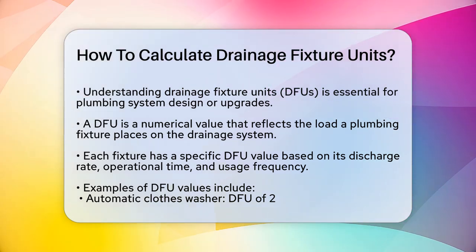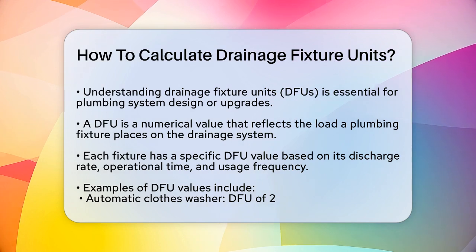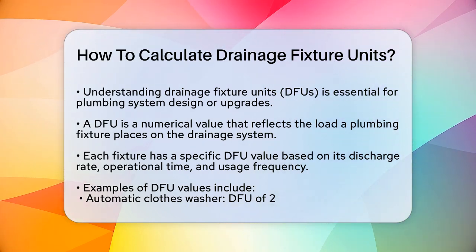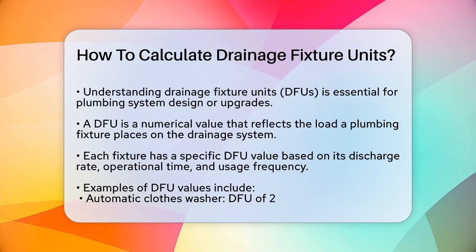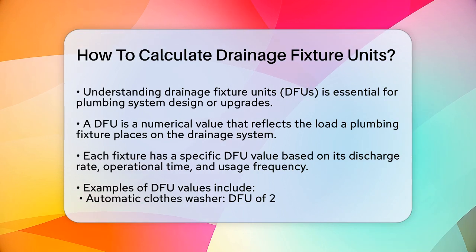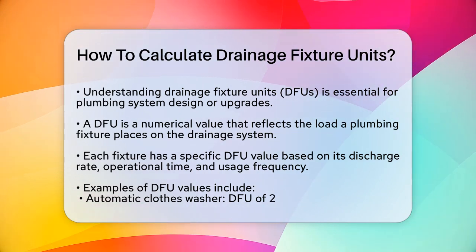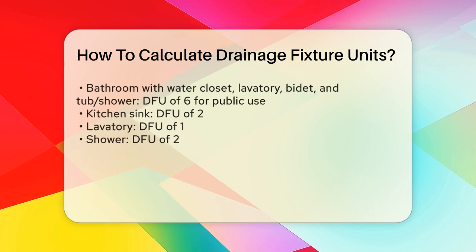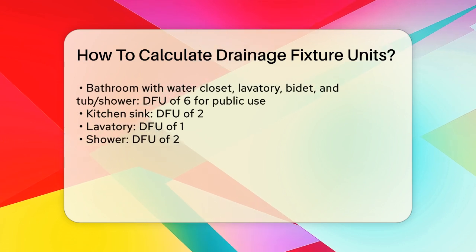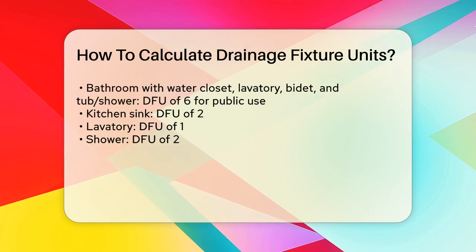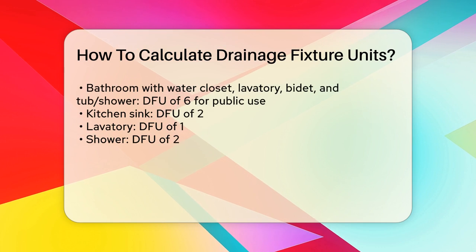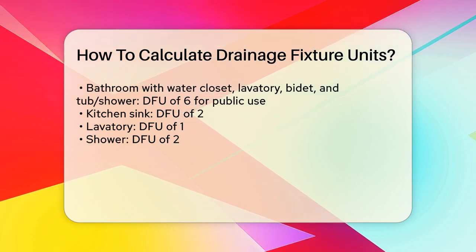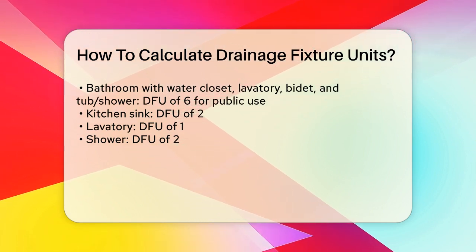To start calculating DFUs, you need to identify the types of fixtures in your system. Each fixture has a specific DFU value. For example, a residential automatic clothes washer has a DFU of two, while a bathroom that includes a water closet, lavatory, bidet, and tub or shower has a DFU of six for public installations.